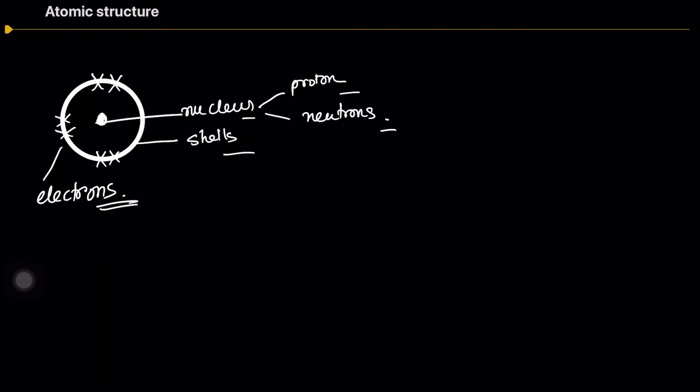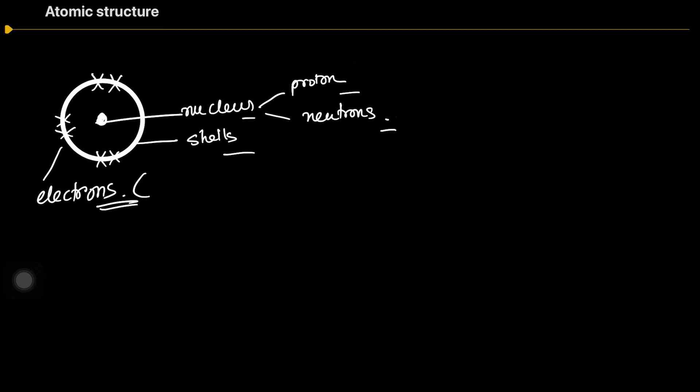If you think about in terms of radiation, electrons are referred to as beta particles, protons as alpha particles, and neutrons are basically neutral, referred to as gamma particles. But we're not thinking about radiation — we'll think in terms of chemistry, so let's forget this for a while.